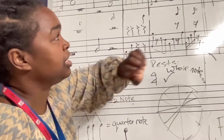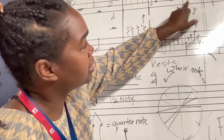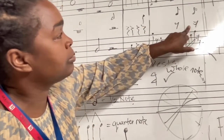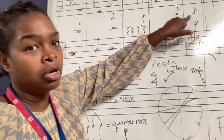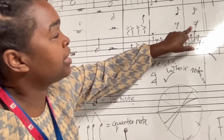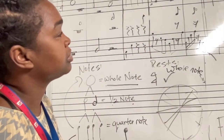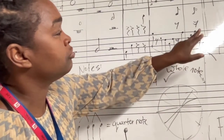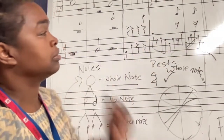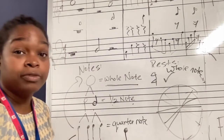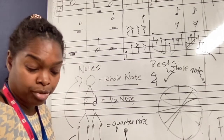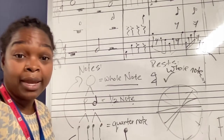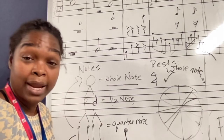For the sixteenth note, you can see it has two flags — it looks like that as a single note, and that is how it looks as a rest. So for example: one-E-and-a, rest on E-and-a. Hopefully this has been pretty easy to understand, and I will catch you later!